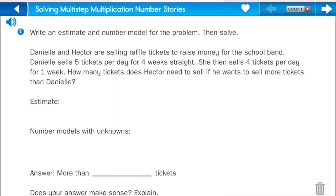Danielle and Hector are selling raffle tickets to raise money for the school band. Danielle sells five tickets per day for four weeks straight. She then sells four tickets per day for one week. How many tickets does Hector need to sell if he wants to sell more tickets than Danielle?